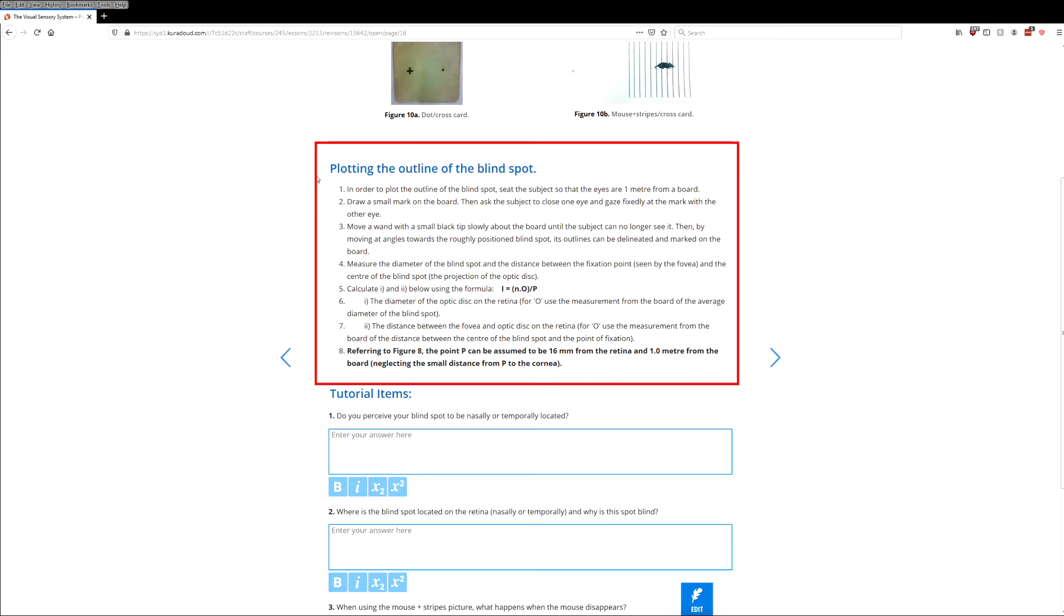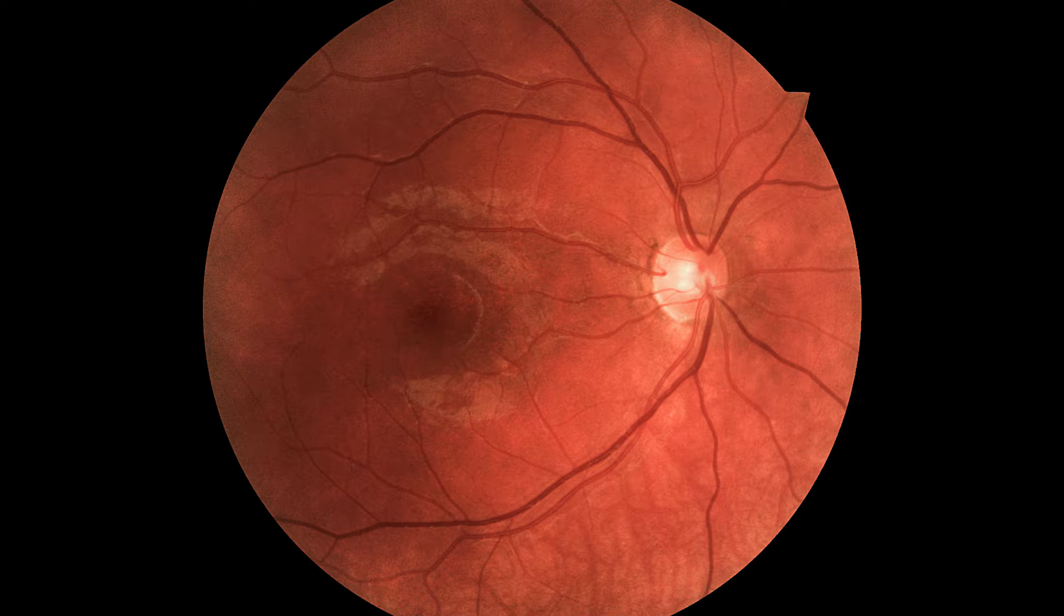Now the next activity is measuring the size of the blind spot. So somewhere on the back of your retina is the optic nerve as it exits the eye. That optic nerve or optic disc as it's called within the retina is a certain size, and this activity will let us measure the size of that optic disc.